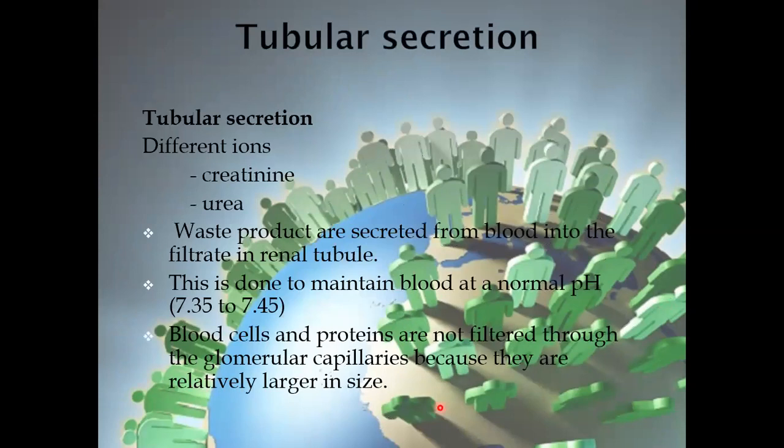Tubular secretion involves different ions, creatinine, and urea, which are formed as metabolic waste products — as a result of nitrogen metabolism. These must be expelled out from the body. The kidney plays a very important role in this third step to maintain the blood at a normal pH. The normal pH of the blood is 7.35 to 7.45. Blood cells and proteins are not filtered through the glomerular capillaries because their size is relatively larger.